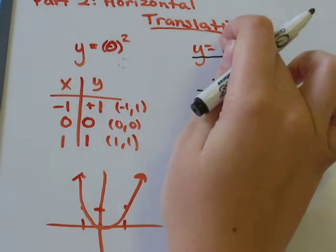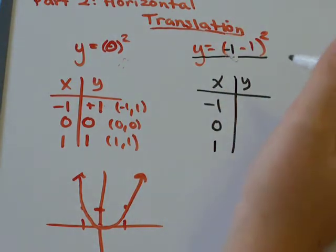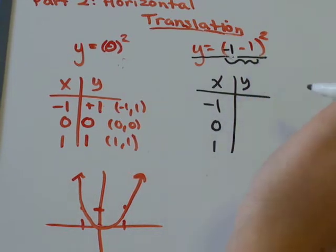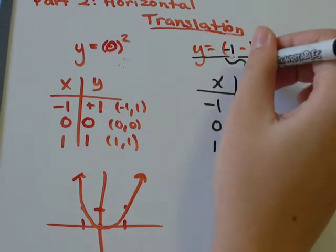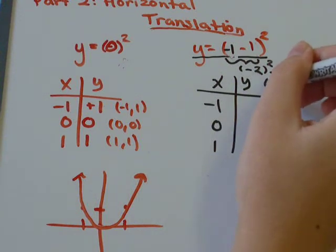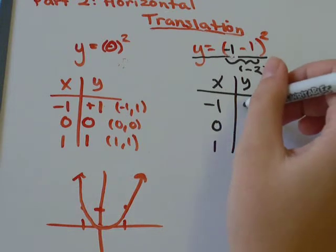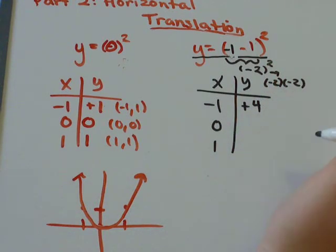If x was negative 1, then up here I would have negative 1 minus 1. Negative 1 minus 1 would be negative 2. And negative 2 squared means negative 2 times negative 2. Negative 2 times negative 2, 2 times 2 is 4. Negative times a negative is a positive. So I've got positive 4.